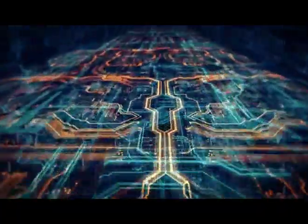To recap the different types of testing and environments covered: first, unit testing is done by the development team in the development environment — they may maintain multiple environments such as dev1 and dev2. Second, system testing is done by developers or the testing team. The system test environment involves white-box testing with no integration with downstream or upstream applications, so stubs and drivers are used for component-by-component testing.